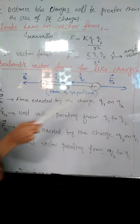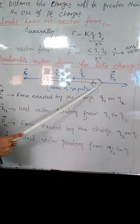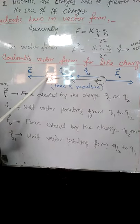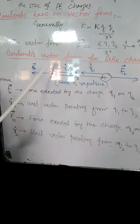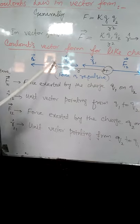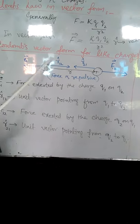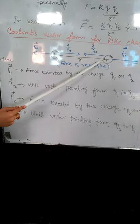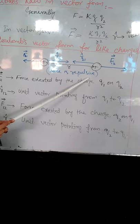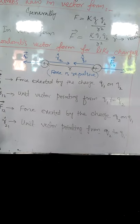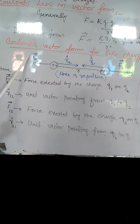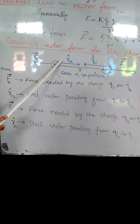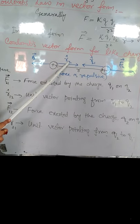The next point is vector form for like charges. Here we are considering two like charges. We can take both charges positive or both charges negative. Their central distances are, as these both charges are same, so electric force here will be repulsive force.